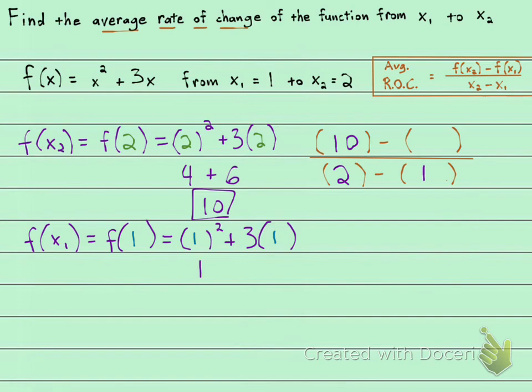1 squared is 1, plus 3 times 1 is 3. 1 plus 3 is 4. So that's the number that goes right there.